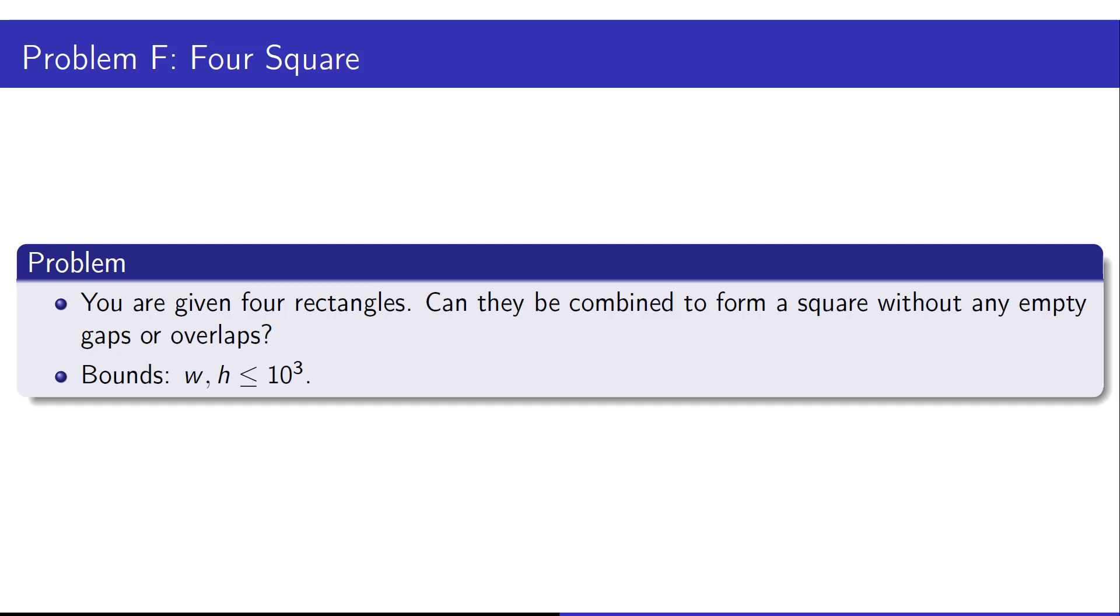In this problem you are given four rectangles and you are asked to determine if they can be combined to form a square without any empty gaps or overlaps. In this problem the width and the height of each of the four rectangles is at most 1000.